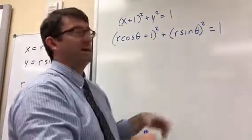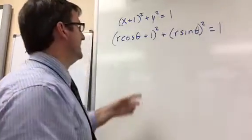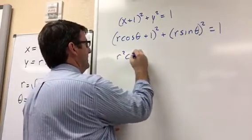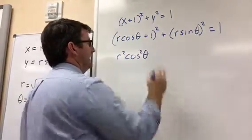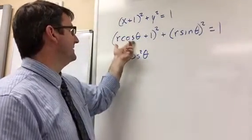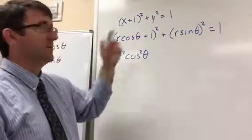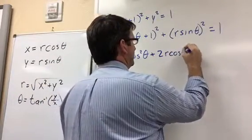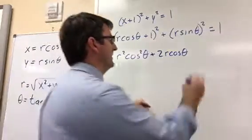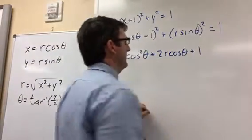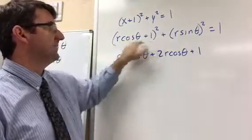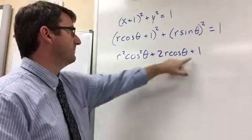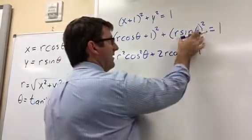Now we need to expand this. (r cosθ + 1)² is the same as (r cosθ + 1)(r cosθ + 1), so we FOIL that. r cosθ times r cosθ is r² cos²θ, then r cosθ times 1 done twice gives us 2r cosθ, and 1 times 1 is 1.